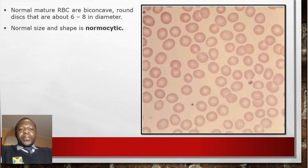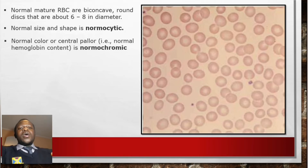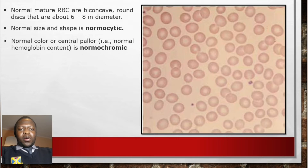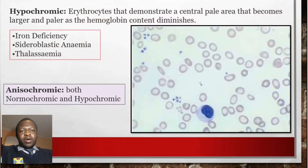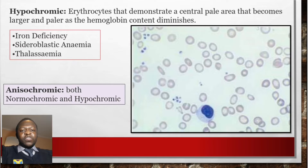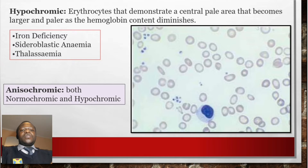The normal shape and size of an RBC is described as normocytic, and the normal color or central hemoglobin content is called normochromic. Hypochromic erythrocytes demonstrate a central pale area that becomes larger and paler as the hemoglobin content diminishes — this occurs when the RBC has a very low amount of hemoglobin.